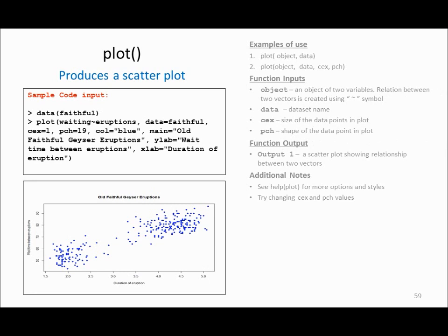Another very useful function is plot, which produces a scatter plot between two attributes or variables. Scatter plots are used to find out the relationship between two variables. In this example I am looking at the relationship between the duration of eruption and the waiting time of a geyser. By looking at this plot I can say that if the duration of eruption is larger then the waiting time is also larger, and if the duration is very low then the waiting time is also very low.